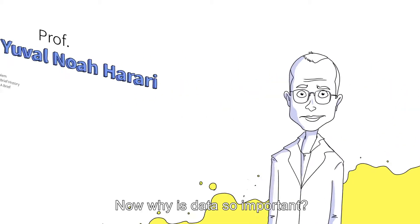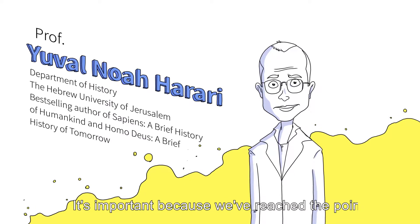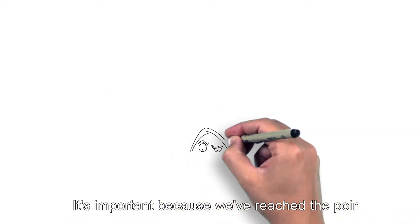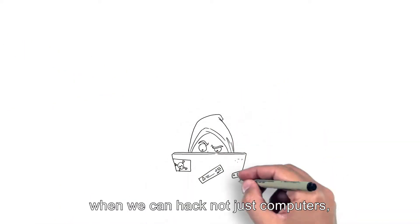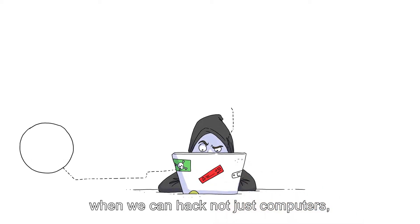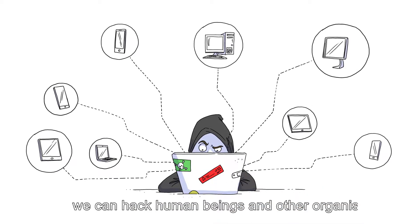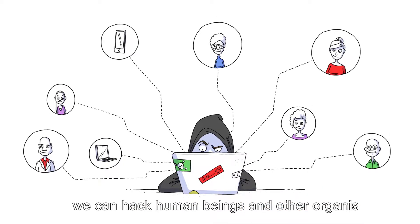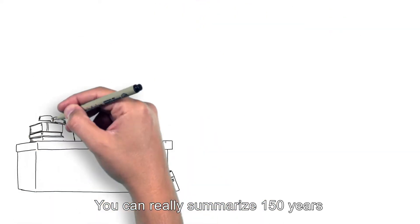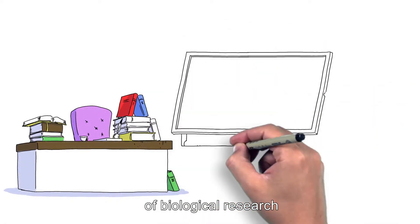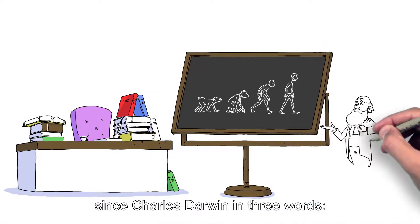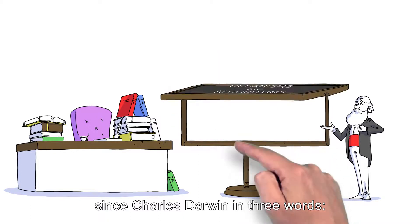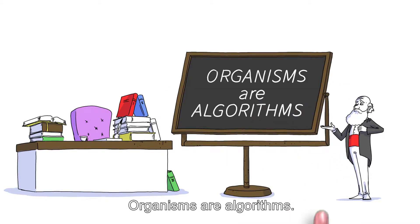Why is data so important? It's important because we've reached the point when we can hack not just computers, we can hack human beings and other organisms. You can really summarize 150 years of biological research since Charles Darwin in three words: Organisms are algorithms.